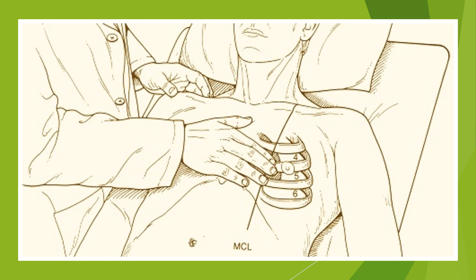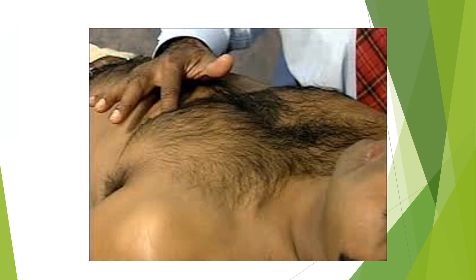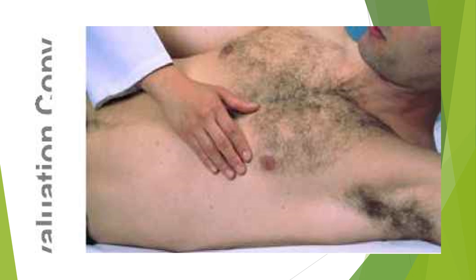When you examine for an apical impulse by palpating the chest, you will keep your entire arm over the precordium. Once you feel the apical impulse at a particular place, you keep a specific point to localize it — that is, to see where and at what position the apical impulse is felt. Then you put the patient in the left lateral position and feel for the character of the apical impulse.